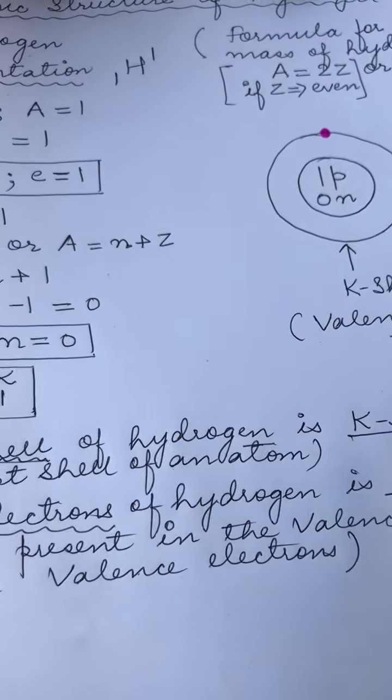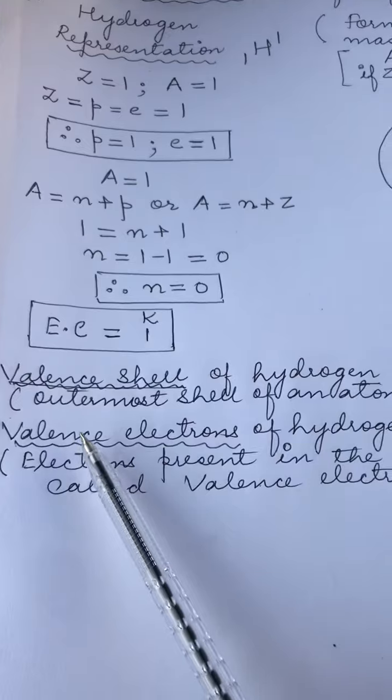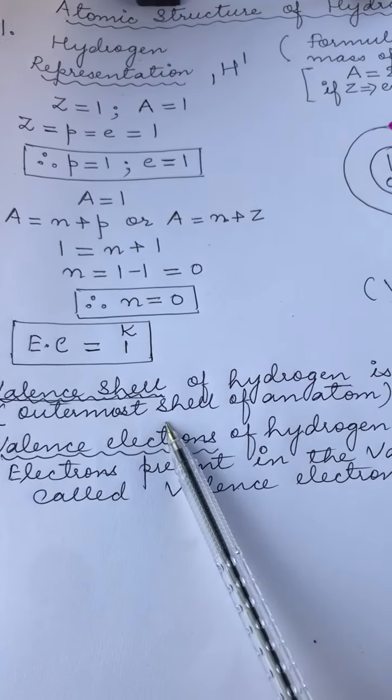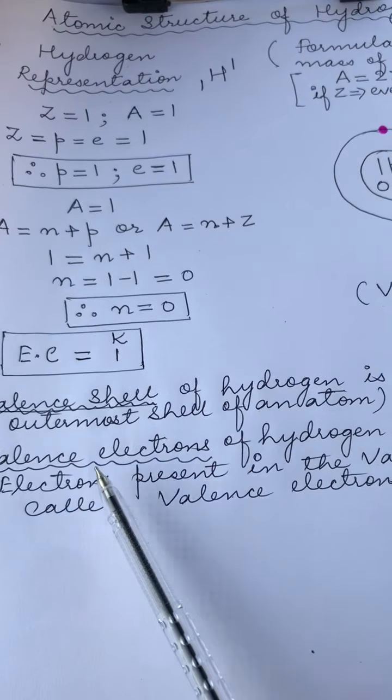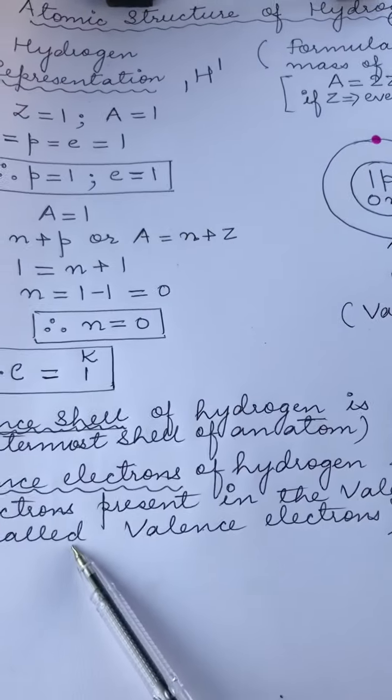Valence shell of hydrogen is the K shell and valence shell is known as the outermost shell of any atom. And the number of electrons which are present in the outermost shell are known as valence electrons.